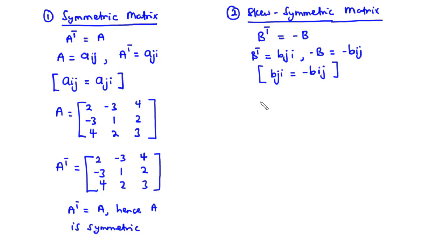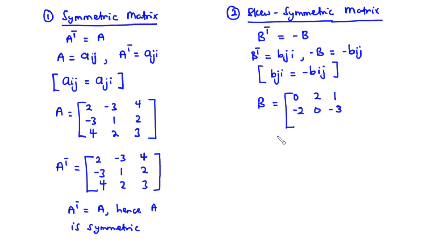An example of a skew-symmetric matrix is this 3 by 3 matrix containing elements 0, 2, 1, negative 2, 0, negative 3, negative 1, 3, 0. For matrix B to be skew-symmetric, the transpose of matrix B should equal the negative of matrix B. So let's find B transpose and then negative B.